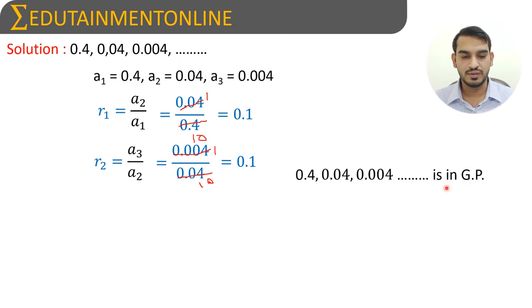To find the next three terms of geometric progression, we need the formula of the nth term, which is aₙ = a × rⁿ⁻¹, where a is 0.4 and r is 0.1. If we substitute these two values in this formula, we can find any term.